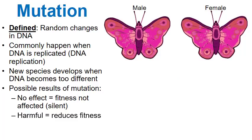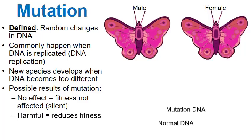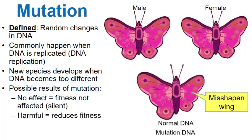Sometimes mutations can be harmful in that they reduce the fitness of an organism. Let's say the male passes on normal DNA and the female passes on a mutation, and because of the mutation this butterfly has a misshapen wing. This would be harmful to its fitness — it's not going to fly very well, and it will be easier prey for birds, lizards, and other predators.